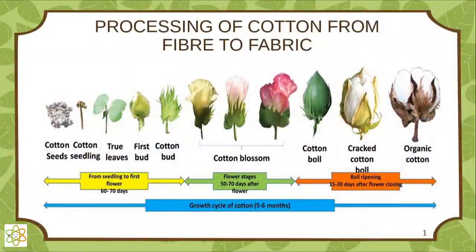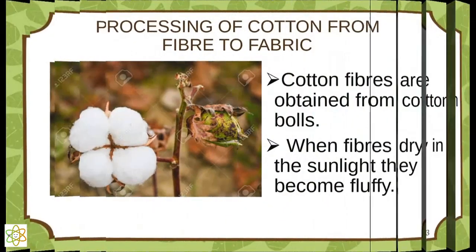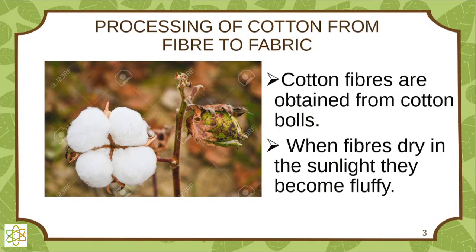Major cotton producing states in India include Gujarat, Maharashtra, Andhra Pradesh, Haryana, Punjab, and so on. This is the growth cycle of cotton — from cotton seeds to cotton bud, the cotton flower, to organic cotton. Fruits of the cotton plant are spherical and are called cotton balls. Cotton balls burst open at maturation.